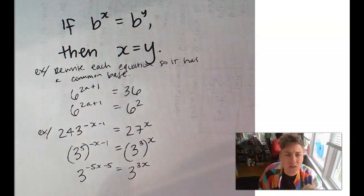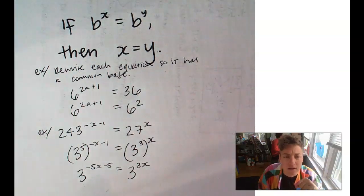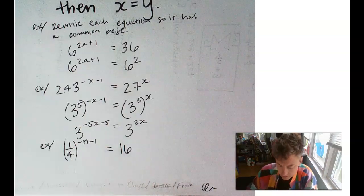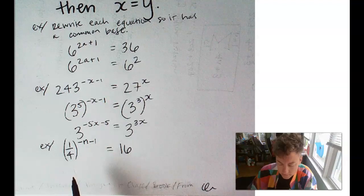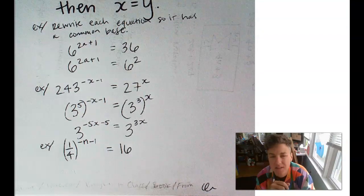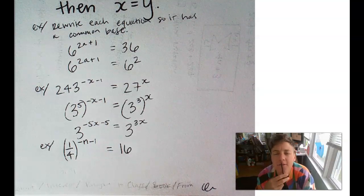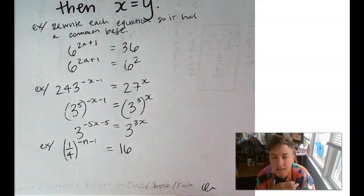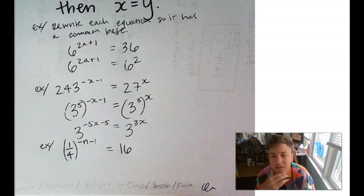One more of these where we rewrite the equation so that it has a common base. Alright, here's our last example. 1/4 to the negative n minus 1 equals 16. Hmm, this is challenging, because now we have a fraction.